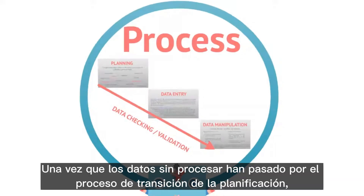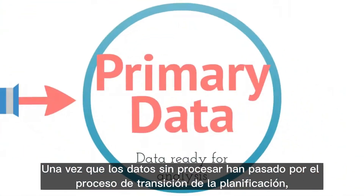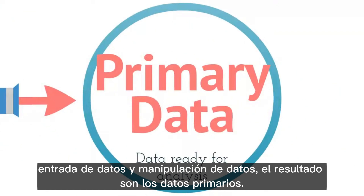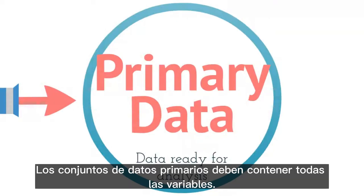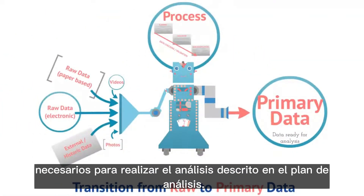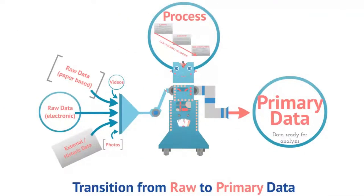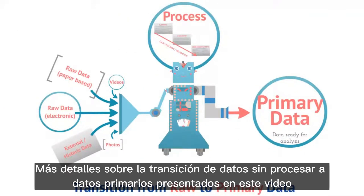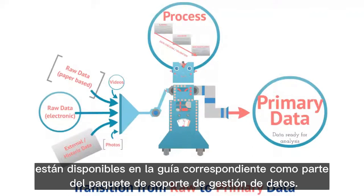Once the raw data has been through the transition process of planning, data entry, and data manipulation, the result is the primary data. Primary data sets should contain all of the variables required to conduct the analysis outlined in the analysis plan. More details about the transition from raw to primary data introduced in this video are available in the corresponding guide as part of the data management support pack.